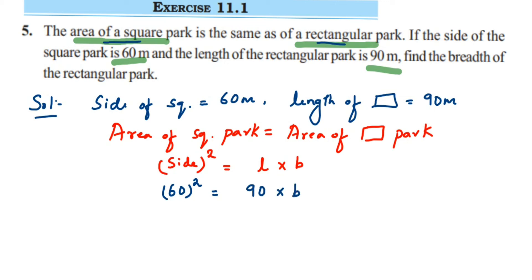Since we want the breadth of the rectangular park, we want to find this b value. I'm going to transpose 90 to the other side of the equation. So 90 is in multiplication, when it transposes to the other side it comes in division. I'm going to rearrange this, so b equals...